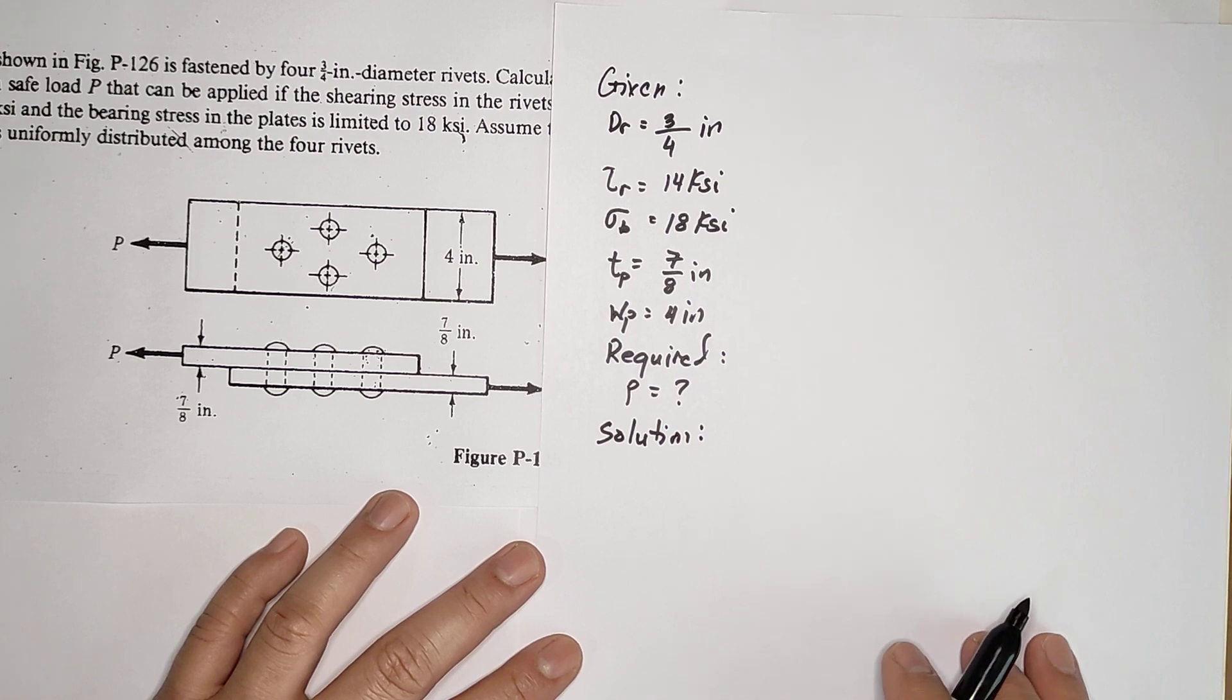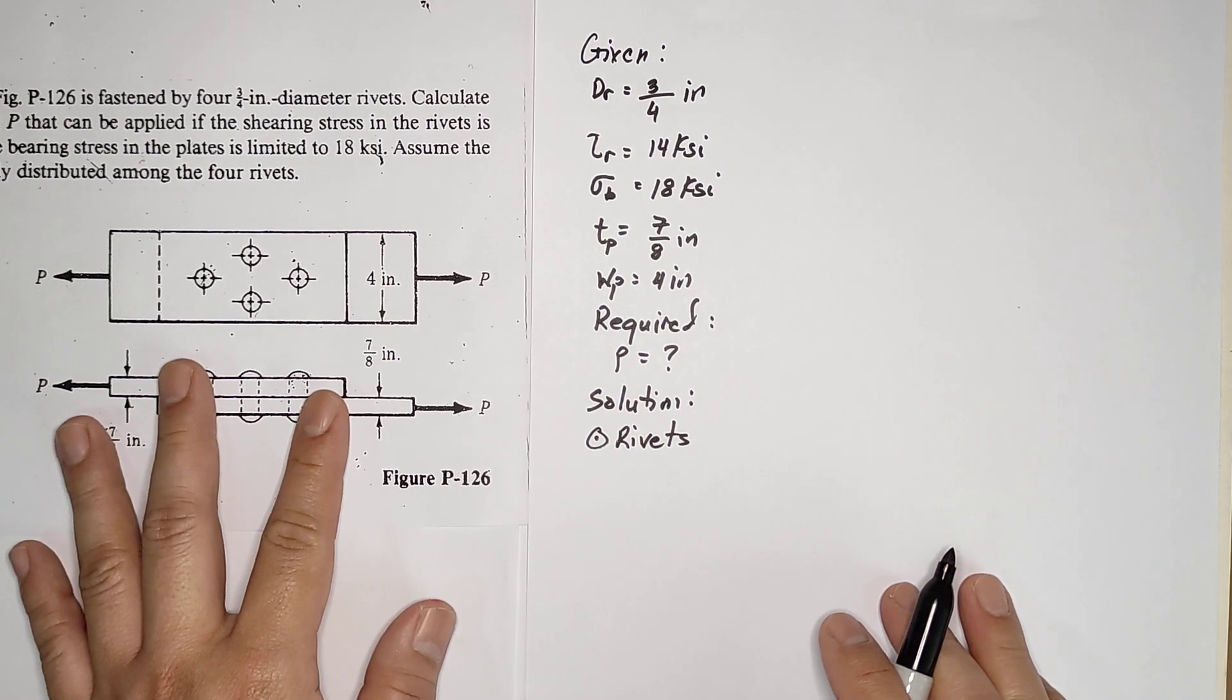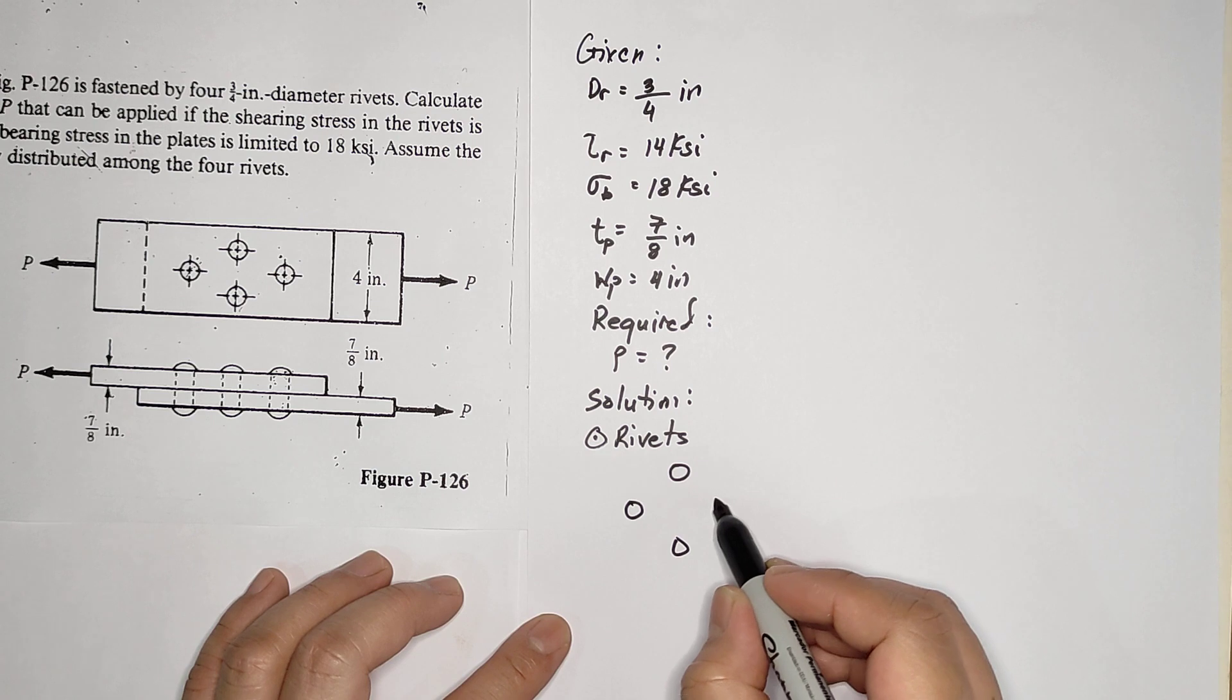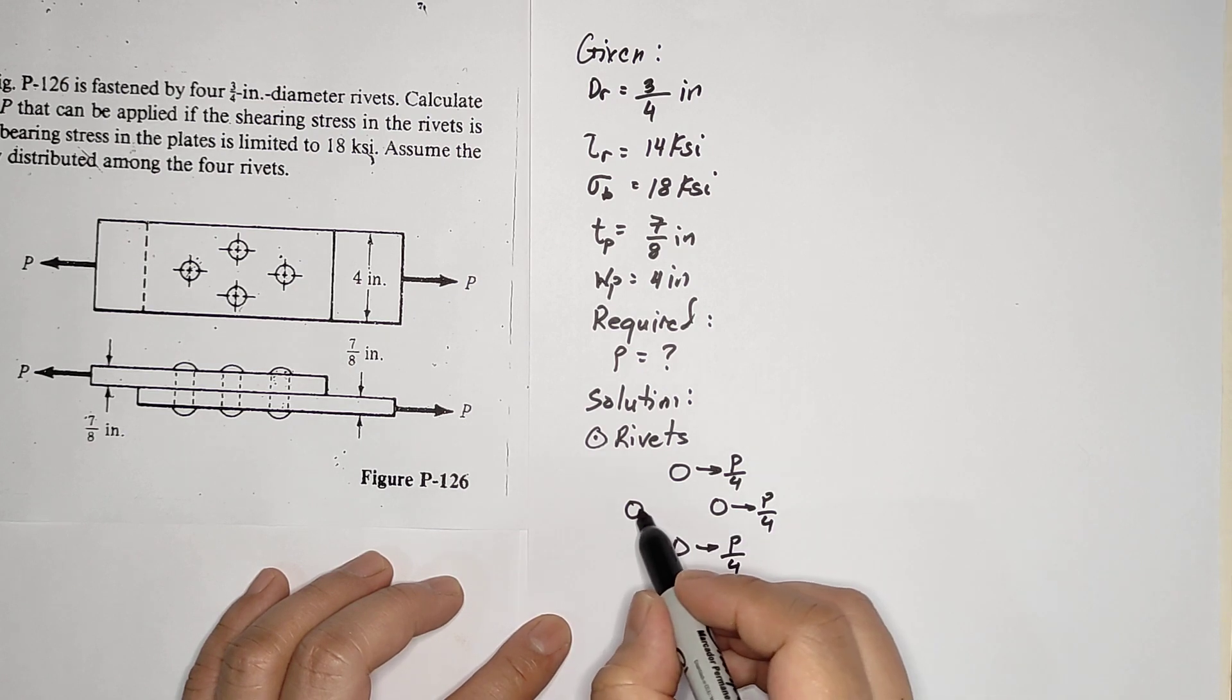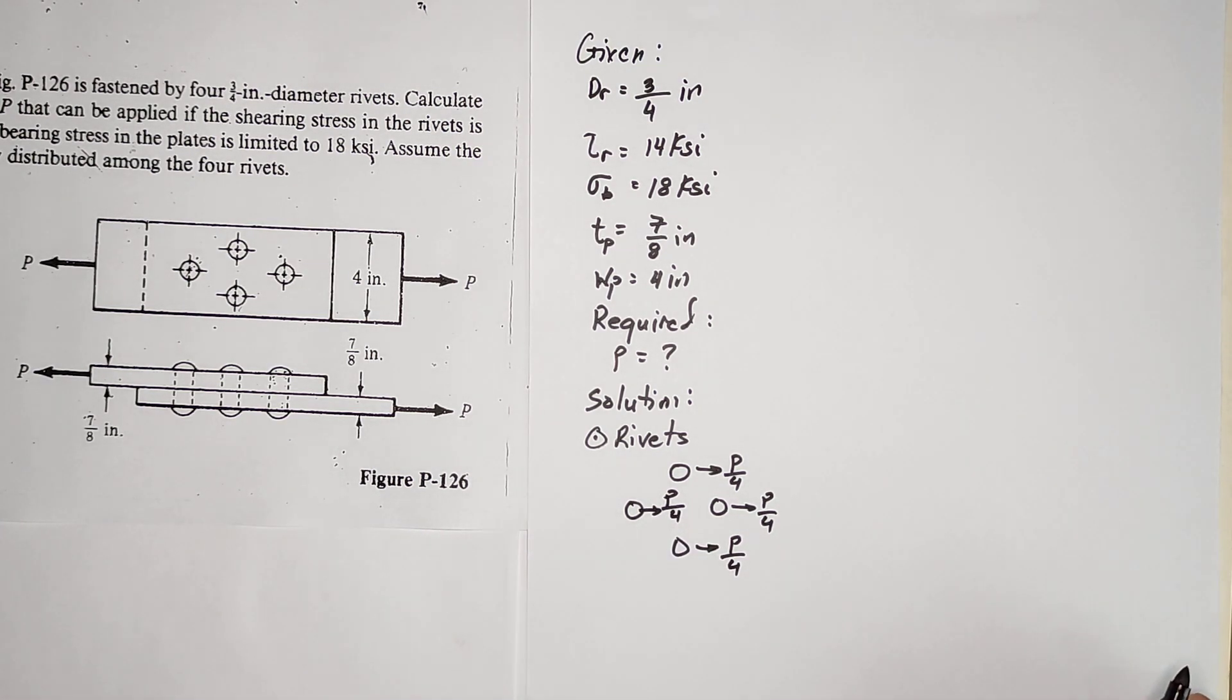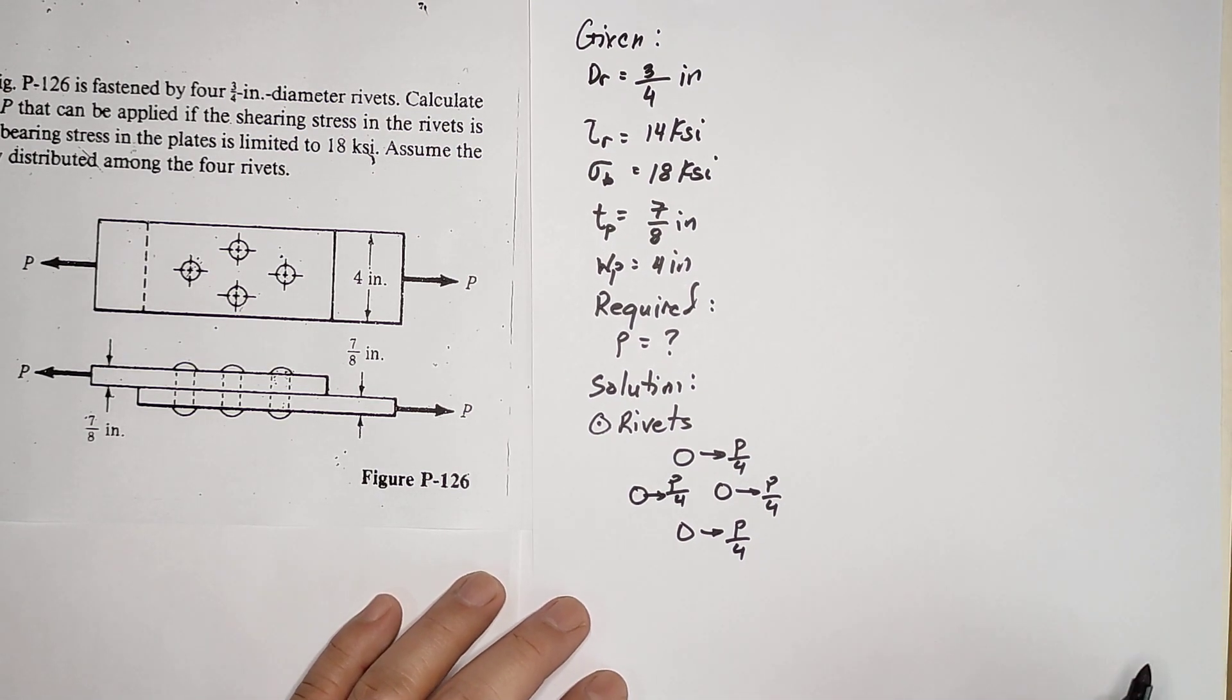Solution: for the rivets, you have four rivets - one, two, three, four. The force P is distributed uniformly, so each experiences force P over 4. For example, if your P is 100, it means individually they experience a force equivalent to 25.